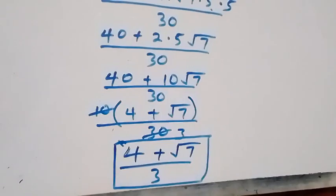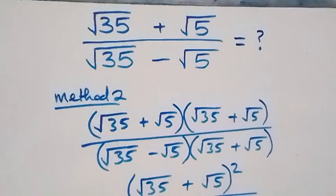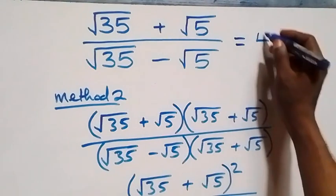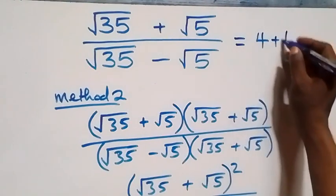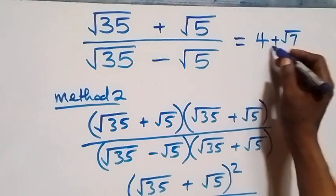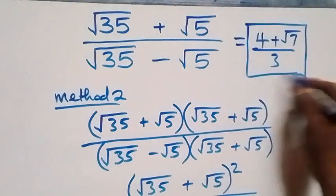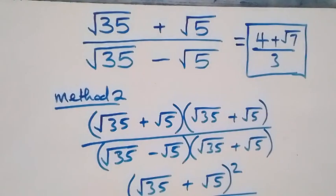So we have come to the end of this class. The answer is (4 + √7) over 3. Thank you for watching. Don't forget to subscribe for more videos and turn on the bell notification. Share this video, give it a thumbs up, and join our membership package for exclusive content. See you next class, bye!